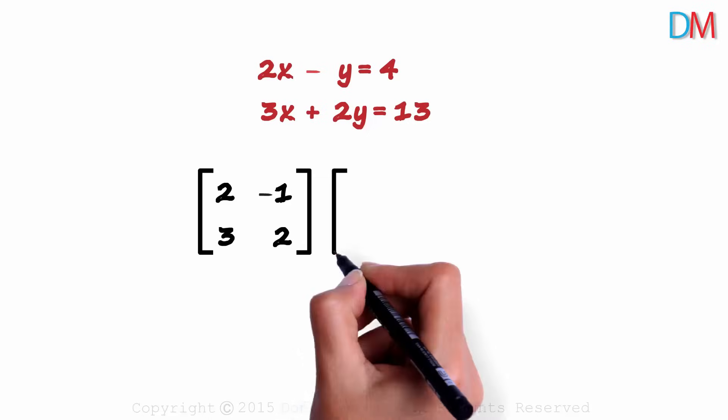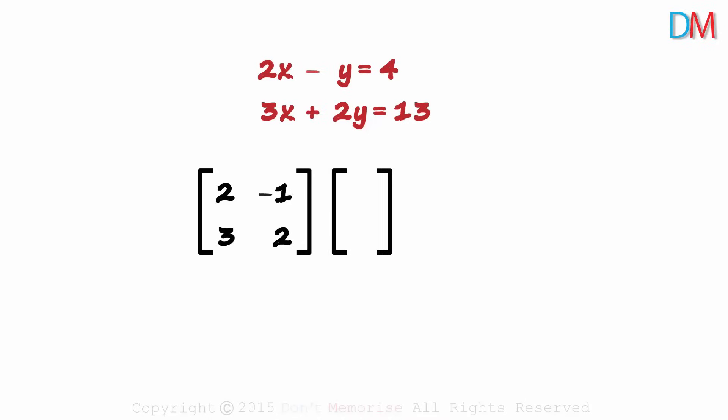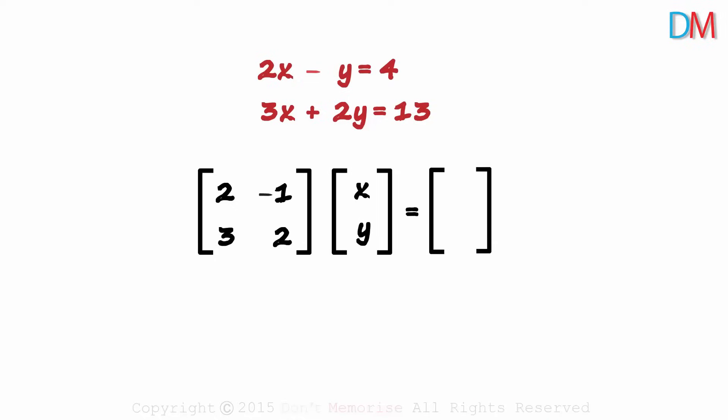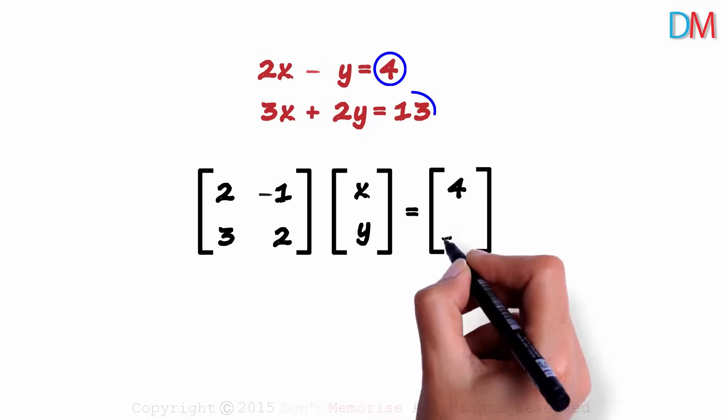And this will be multiplied with a matrix which has the column of variables. The variables are x and y. So a matrix with the coefficients multiplied with a matrix with the column of variables. And this product is equal to a matrix with the column of the constants on the right hand side. That will be 4 and 13.